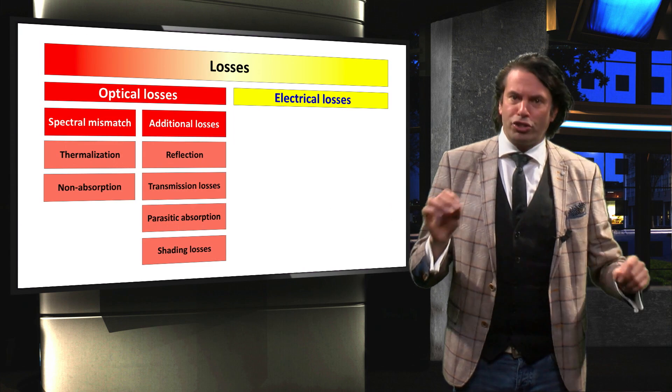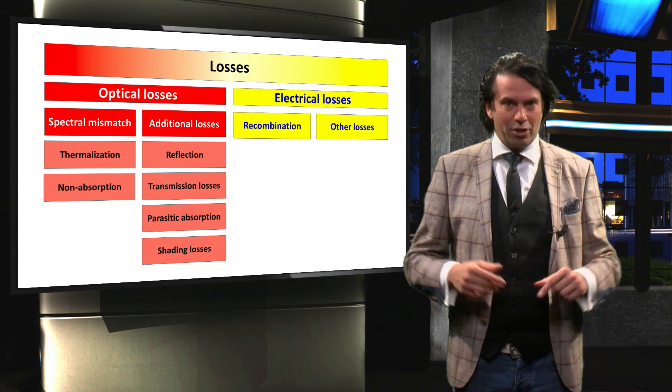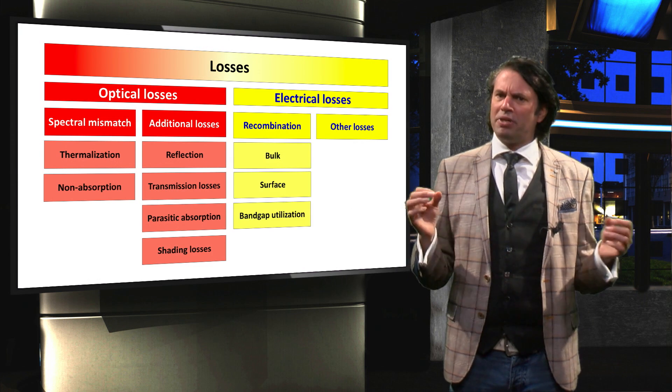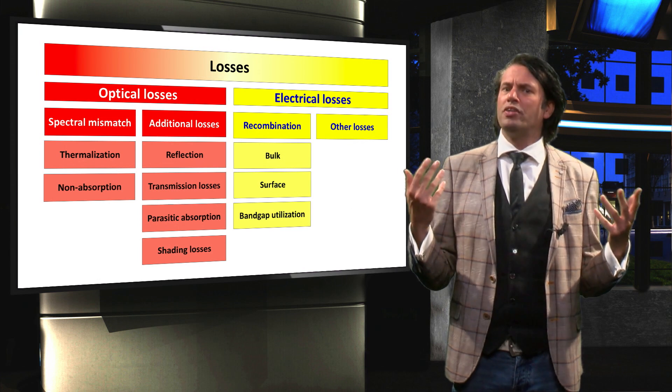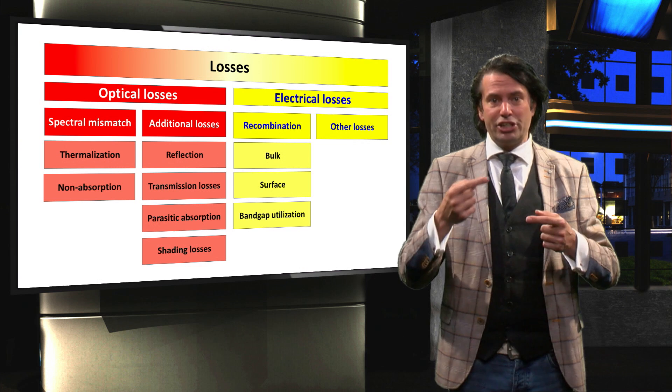In the electrical losses section, we consider the recombination losses and other losses. Recombination losses occur when an electron, after excitation, falls back to its initial energy state.